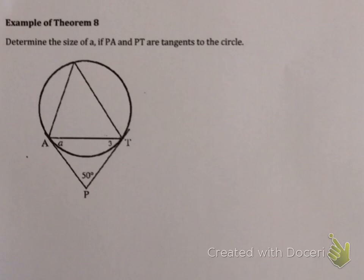So let's have a look at an example. This says determine the size of A, if PA and PT are tangents. Now as soon as I see the word tangents, I need to start thinking about Theorem 7, 8, and eventually Theorem 9. So Theorem 7 said tangents would be perpendicular to radii, and Theorem 8 says tangents will be equal in length. Now I can immediately label that. This means Theorem 8 says PA and PT are equal.